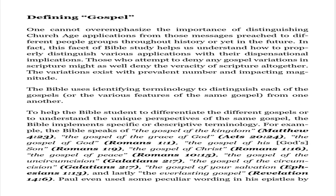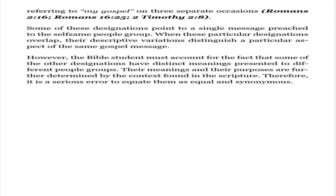For example, the Bible speaks of the gospel of the kingdom (Matthew 4:23), the gospel of the grace of God (Acts 20:24), the gospel of God (Romans 1:1), the gospel of His Son (Romans 1:9), the gospel of Christ (Romans 1:16), the gospel of peace (Romans 10:15), the gospel of the uncircumcision (Galatians 2:7), the gospel of the circumcision (Galatians 2:7), the gospel of your salvation (Ephesians 1:13), and the everlasting gospel (Revelation 14:6). Paul also used peculiar wording by referring to 'my gospel' on three occasions: Romans 2:16, Romans 16:25, and 2 Timothy 2:8.